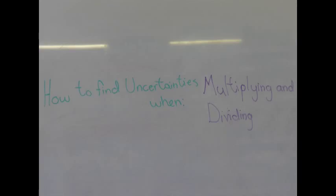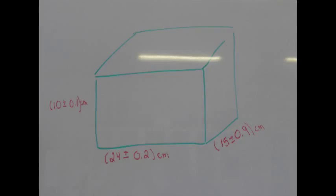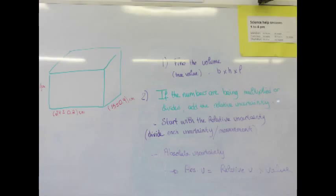How do you use uncertainties when you multiply or divide measurements? First, I'm going to show you the basic steps that you have to follow when doing multiplications and divisions of numbers with uncertainties. Here is a box. Two questions are asked: find the volume and find the absolute and relative uncertainties of the box. Here are the steps you want to follow.